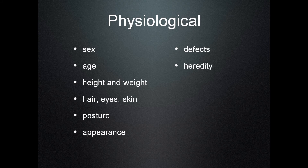The physiological aspects of a character include: sex, age, height and weight, hair, eyes, and skin, posture, appearance, defects, and anything earned from heredity. I may not always use this when describing characters, but it certainly informs the way I articulate what my character is going to say.